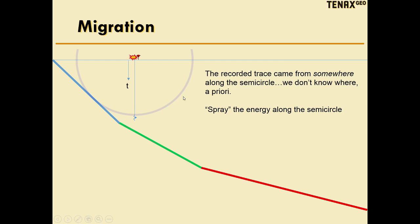Here's a semicircle, at a certain time T, with radius T, that essentially this energy could have come from anywhere along this semicircle. In reality, it came from this blue reflector over here, but we don't know that a priori.